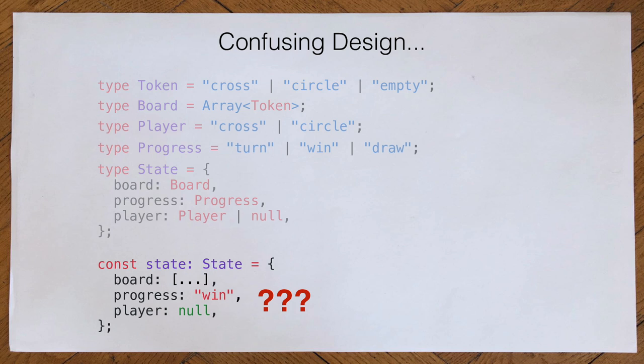If you have a win condition, there needs to be a player. If there's a draw, there's no player — because nobody won. This is a confusing design. What happens if we unintentionally initialize a state with progress 'win' but there's no player? Player null has won — that doesn't make any sense. We see this many times in UIs. I even saw it in Slack, where it said 'user null was joining the channel.' Null pointer exceptions and null references are really a pain.